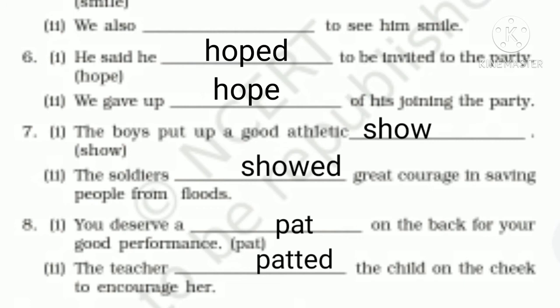Eighth sentence: 'You deserve a dash on the back for your good performance.' The word given is 'pat,' used as a noun, so we write 'pat.' In the next sentence, 'The teacher patted the child on the cheek to encourage her,' 'patted' is used as a verb — note the double-t spelling.